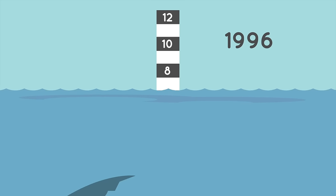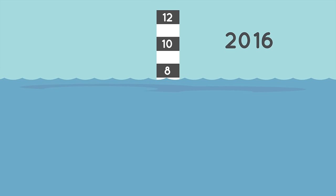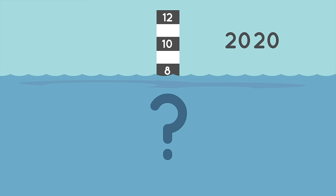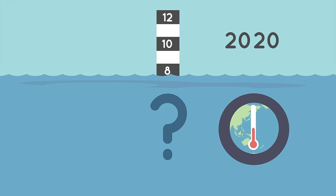The ocean is about seven to eight inches higher now than it was a century ago. Why? Because Earth is getting warmer.